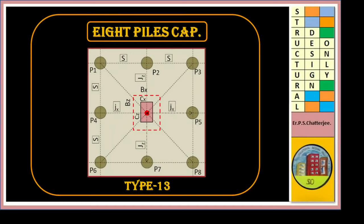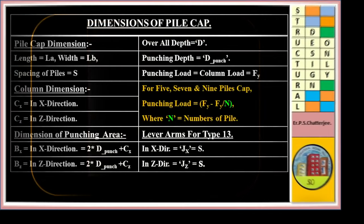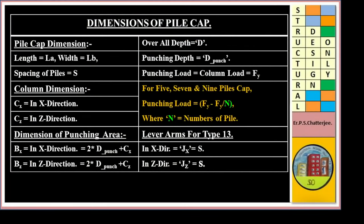For a first-order 8-pile cap, the dimensions are: pile created dimension LH, spacing of pile S, column dimension Cx in the x-direction and Cz in the z-direction. Dimension of punching area: Bx in x-direction equals 2 times D-punch plus Cx; Bz in z-direction equals 2 times D-punch plus Cz. Overall depth D, punching depth D-punch. Punching load equals column load equals Fy. For 5, 7, and 9 pile caps, punching load equals Fy minus N times pile load, where N is the number of piles within the punching perimeter.